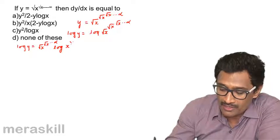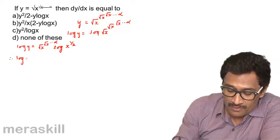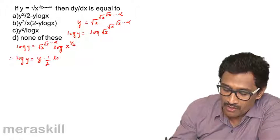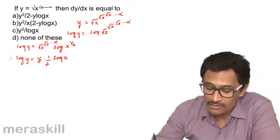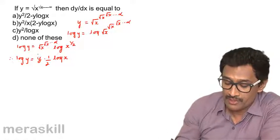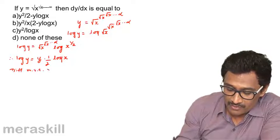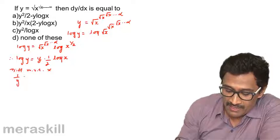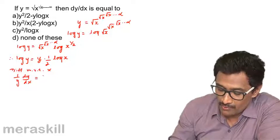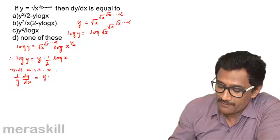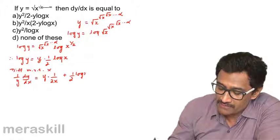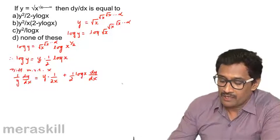Now log(√x) = log(x^(1/2)) = (1/2)·log(x). Also, note that √x raised to the infinite tower is y itself, so we can write: log y = y · (1/2)·log(x). Now differentiate both sides with respect to x using the product rule.